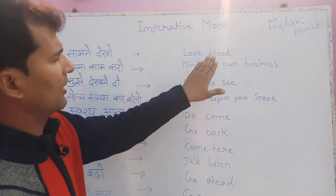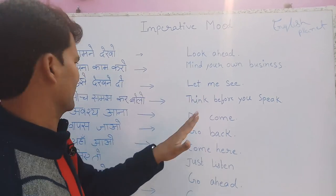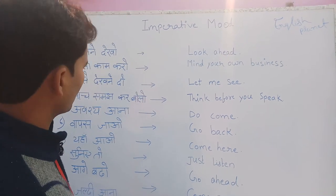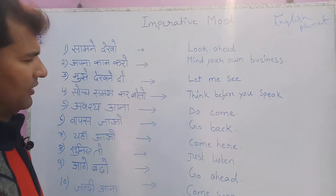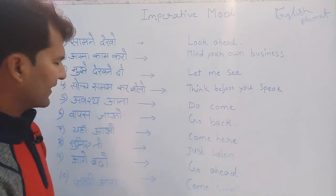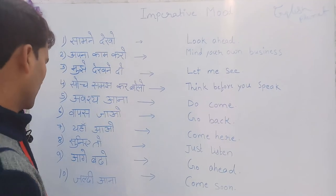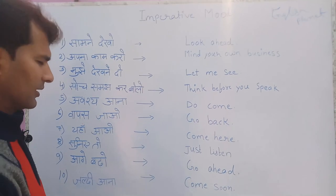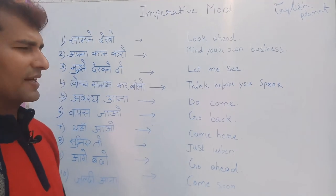Quick revision: 'Look ahead.' 'Apna kaam karo' — 'Mind your own business.' 'Mujhe dekhne do' — 'Let me see.' 'Soch samajh kar bolo' — 'Think before you speak.' 'Do come.' 'Vaapas jao' — 'Go back.' 'Yahan ao' — 'Come here.' 'Suniye to' — 'Just listen.'